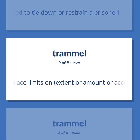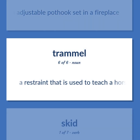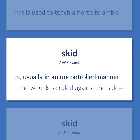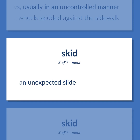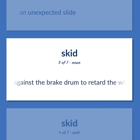Trammel: Place limits on extent, amount, or access. An adjustable pot hook set in a fireplace. A restraint that is used to teach a horse to amble. Skid: Move obliquely or sideways, usually in an uncontrolled manner — the wheels skidded against the sidewalk. An unexpected slide. A restraint provided when the brake linings are moved hydraulically against the brake drum to retard the wheel's rotation.